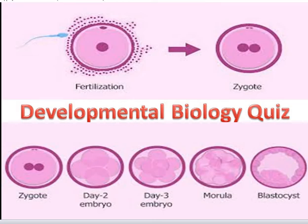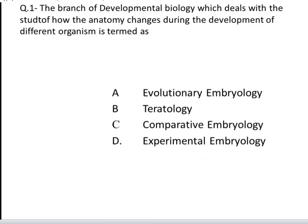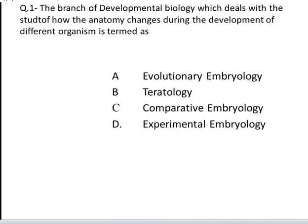The very first question is: the branch of developmental biology which deals with the study of how the anatomy changes during the development of different organisms is termed as. These are your four options: A. Evolutionary embryology, B. Teratology, C. Comparative embryology, D. Exponential embryology.